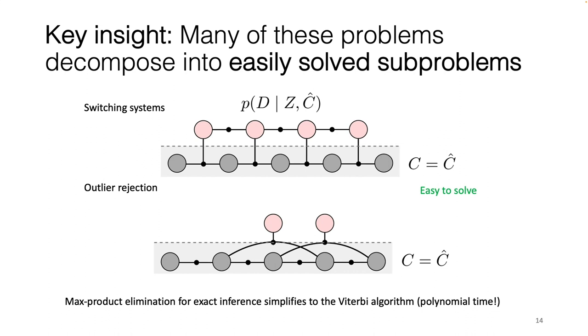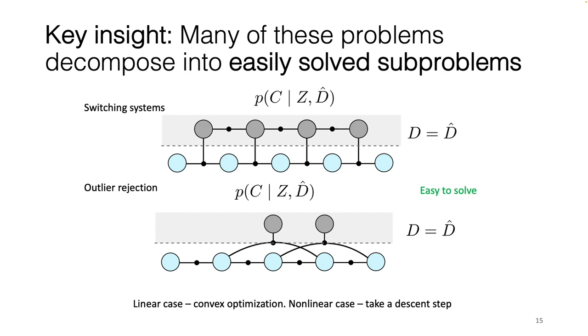Our key insight is that while inference in hybrid graphical models is generally hard, these problems often split into easily solved subproblems. For example, if we happen to know the correct assignment to the continuous states, inference over the remaining discrete variables simplifies either by splitting into independent subproblems or resulting in chains which can be solved in polynomial time.